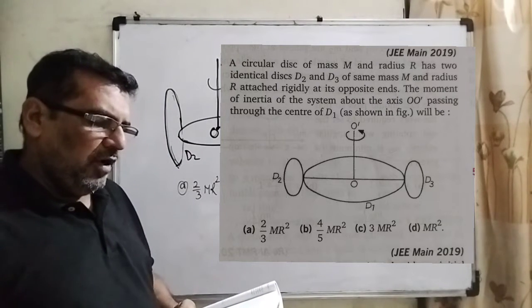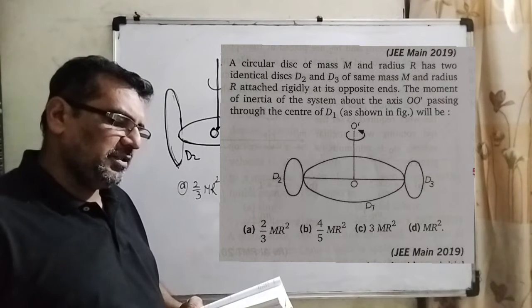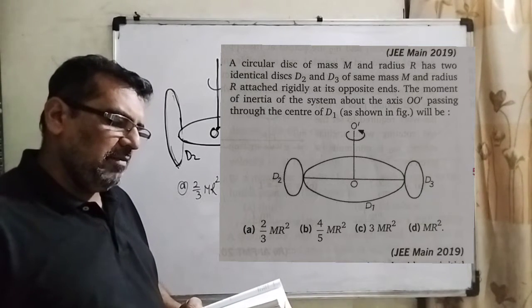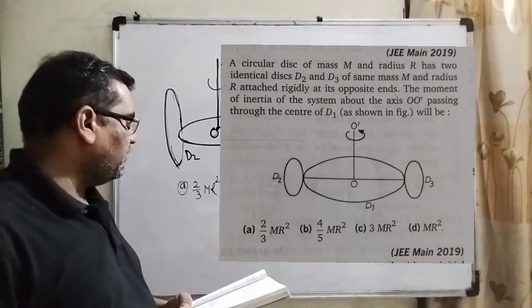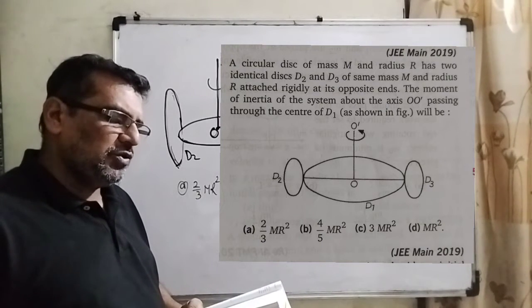You are given four options. A: 2/3 MR². Option B: 4/5 MR². Option C: 3 MR². Option D: MR². This question is asked JEE Mains 2019.